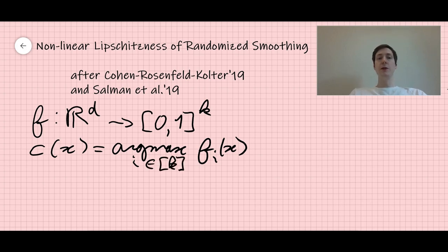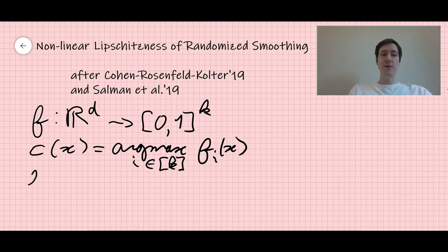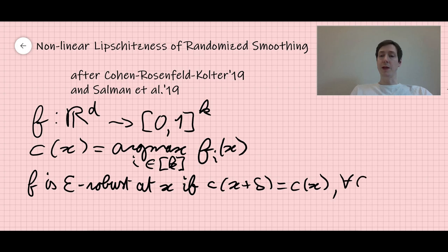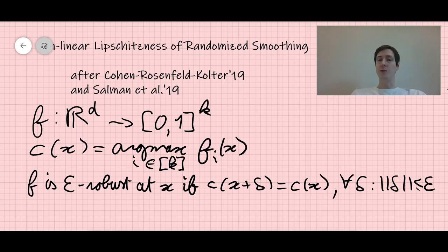Now in adversarial machine learning, we're not only interested in C being correct, but we also don't want adversarial examples — meaning small perturbations of the input where suddenly the classifier outputs something different. We're going to say that f is epsilon-robust at the point x if the classification remains constant on the small ball around x, meaning C(x + δ) = C(x) for any perturbation δ whose Euclidean norm is smaller than epsilon. And epsilon-robustness is intimately related to Lipschitzness of f.